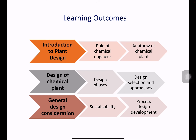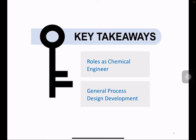For today's learning outcomes, we will focus on three main issues. First, we will introduce plant design — the role of a chemical engineer, the anatomy of a chemical plant, and the design of the chemical plant including various design phases, selection approaches. Finally, we will study general design considerations including sustainability, and how to develop design based on feasibility studies. Key takeaways are the role of a chemical engineer and general process design development.